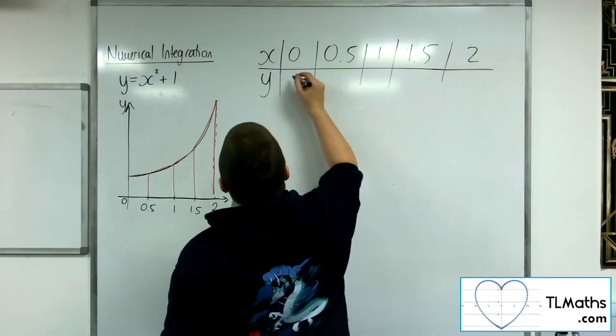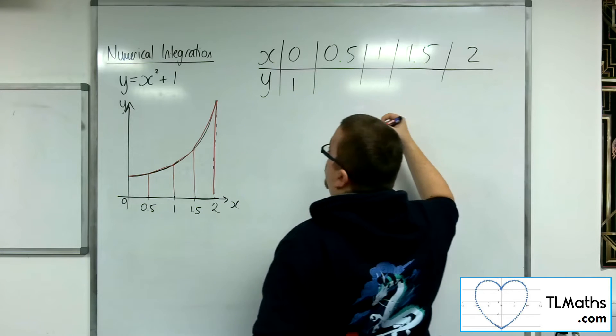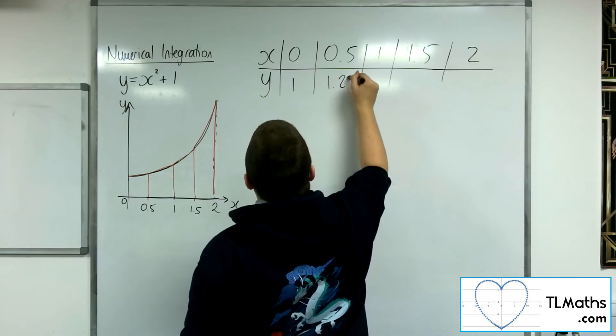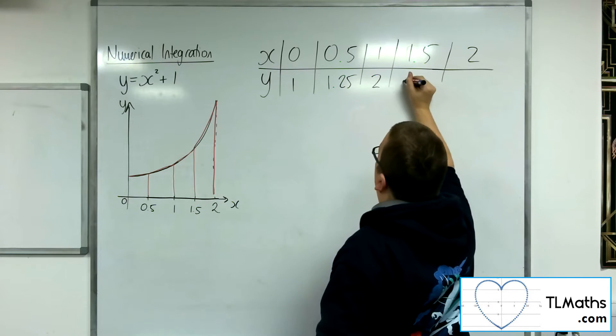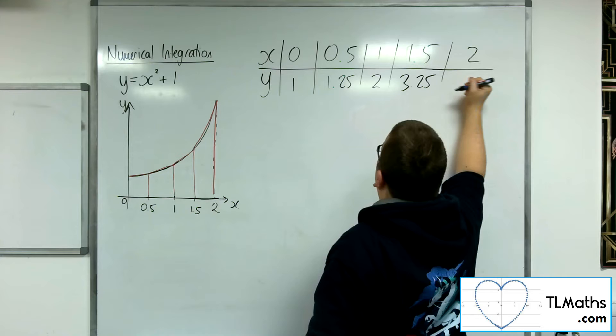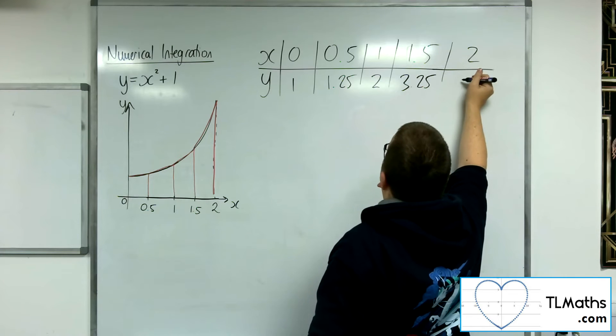So that would be 1. So 1, 0.5 squared so 1.25, 1 squared plus 1, 1.5 squared plus 1 was 3.25, and then 2 squared plus 1 was 5.